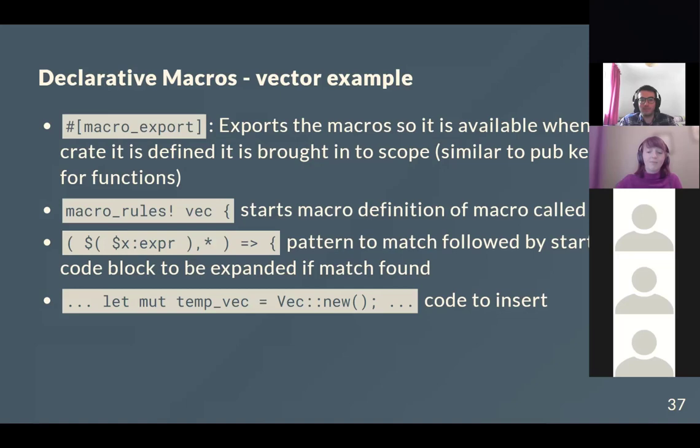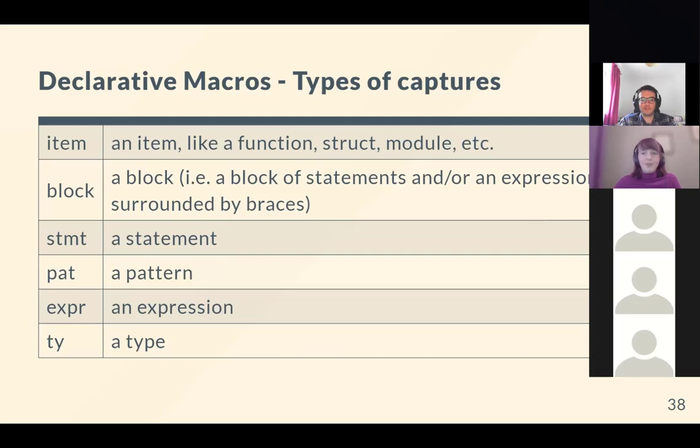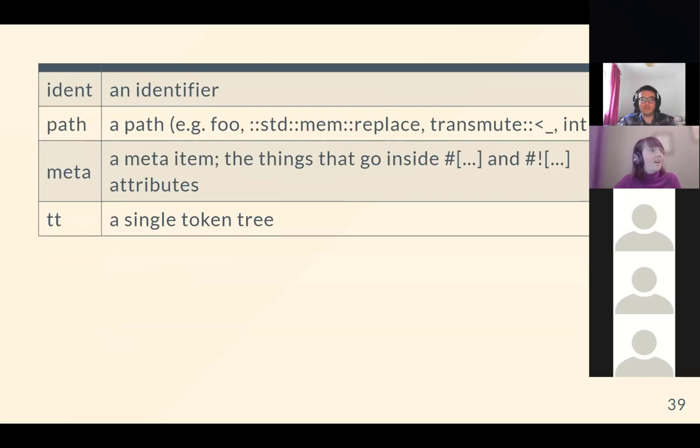In terms of capture types, as well as expr (expression), you can also capture: item, block, stmt (statement), pat (pattern), ty (type), ident (identifier), path, meta, and tt (a single token tree) — which lets you match on a single token rather than a full expression.